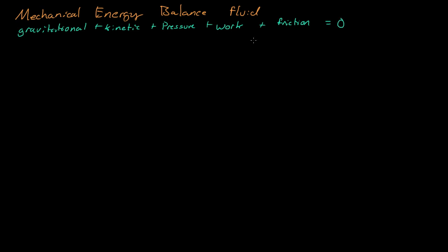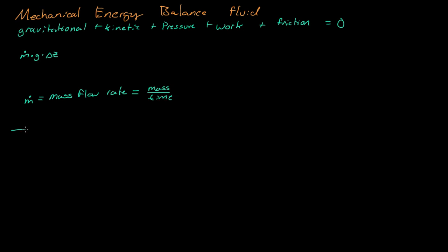What is gravitational energy? If we remember that mass times the acceleration due to gravity, g, times the height of something — that is its gravitational energy. And if it falls some distance, delta z, that is its gravitational potential energy. I want to add a dot to the top of the M, and this little dot signifies the mass flow rate.